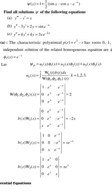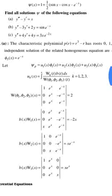Find all solutions of the following equations. First: y''' - y' = x. The characteristic polynomial p(r) = r³ - r has roots 0, 1, -1. The linearly independent solutions of the related homogeneous equation are ψ₁(x) = 1, ψ₂(x) = e^x.